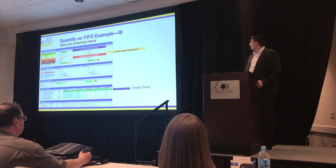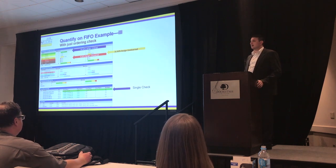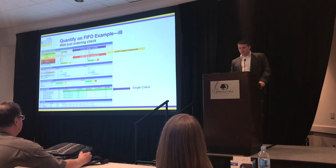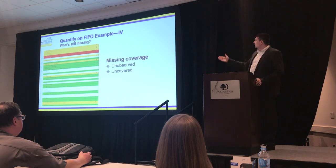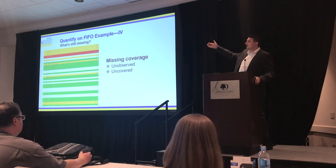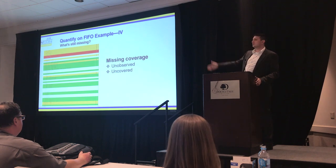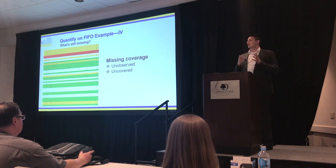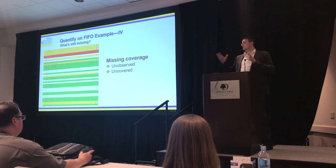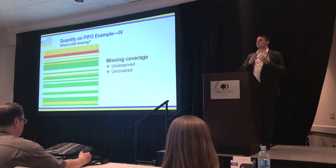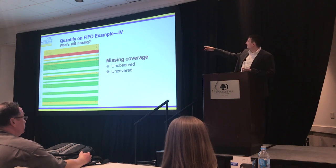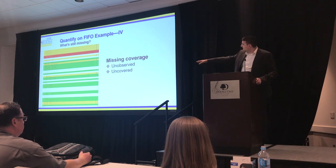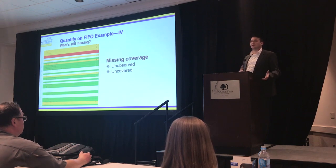I've written my ordering check and I'm expecting pretty high coverage — it's a FIFO, so it should be simple. Quantify says we did cover 63% of the design, but a third of the design is still unobserved. Zooming into the source code, it's very easy to see where coverage is missing — just follow the red and yellow. We have some unobserved code in yellow, meaning the ordering check has fired the line of code but doesn't observe it — so it doesn't really prove anything about that code.